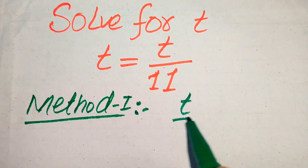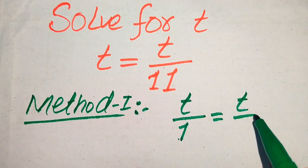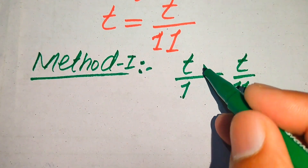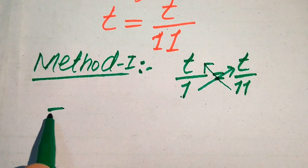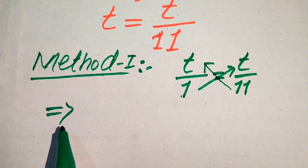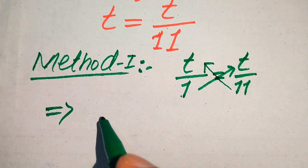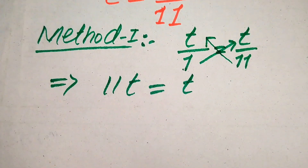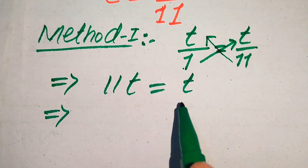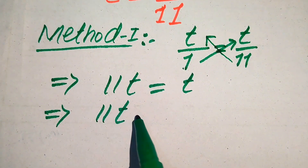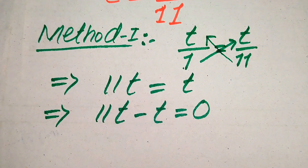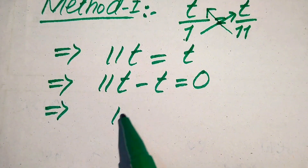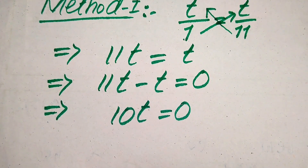First, you see that the denominator on the left-hand side is one, so we write it as t divided by 1 equals t divided by 11. Here we use the cross multiplication technique: we multiply 11 with this t and 1 with the other value. When we cross multiply, it becomes 11t equals t. Now we move all variable terms to the left-hand side, so it becomes 11t minus t equals 0.